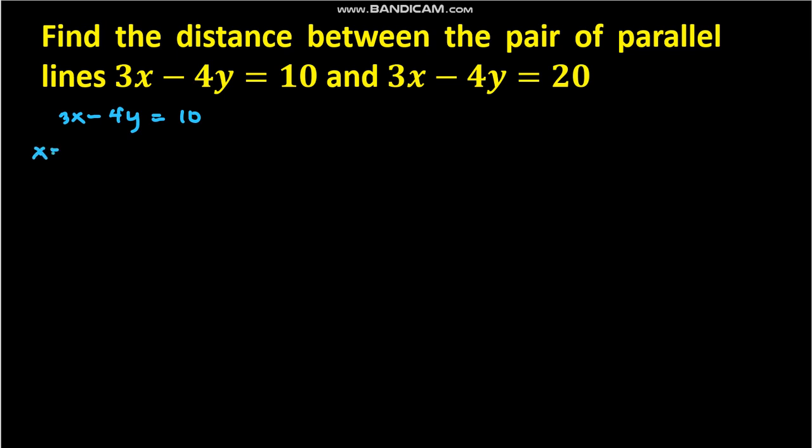If x = 2, we have 3 times 2 minus 4y equals 10. So 6 - 4y = 10, therefore -4y = 10 - 6, thus -4y = 4.